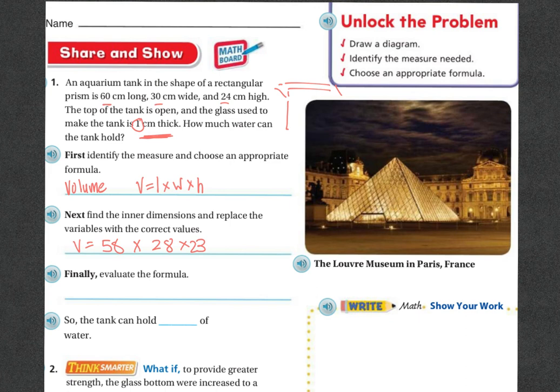Finally, we're going to evaluate the problem. So whenever I do 58 times 28 times 23, I'm going to get volume equals 37,352 centimeters cubed because we're doing the three dimensions. So the tank can hold 37,352 centimeters cubed of water. So you're going to work on the rest of this and the homework pages. And I will be on the carpet if you need me. Good luck.